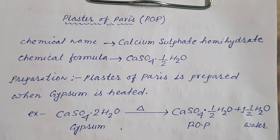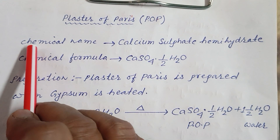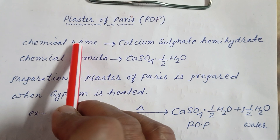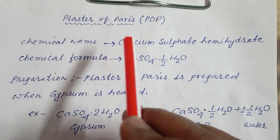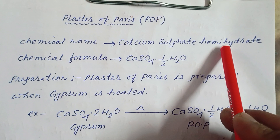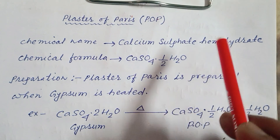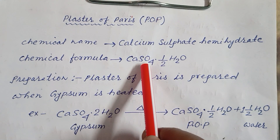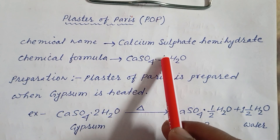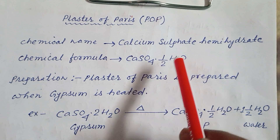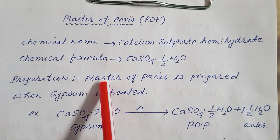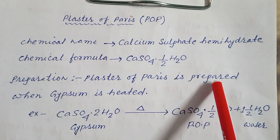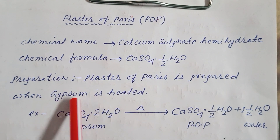Hello everyone. In this video, we will learn about plaster of Paris. The chemical name of plaster of Paris is calcium sulfate hemihydrate. The chemical formula is calcium sulfate dot half H2O.